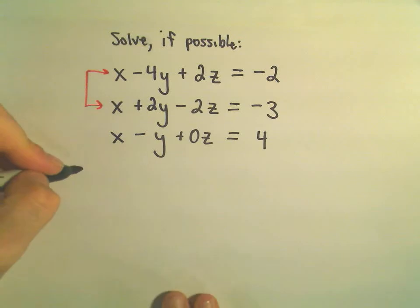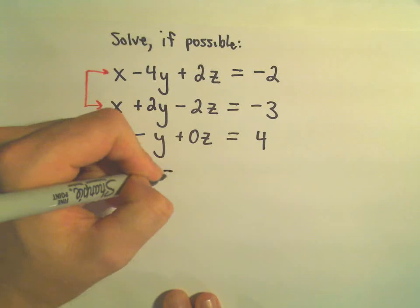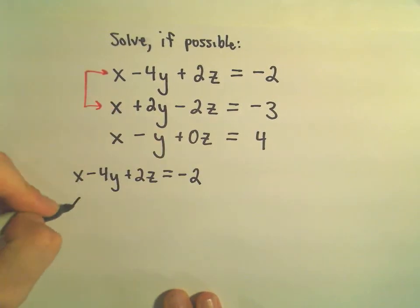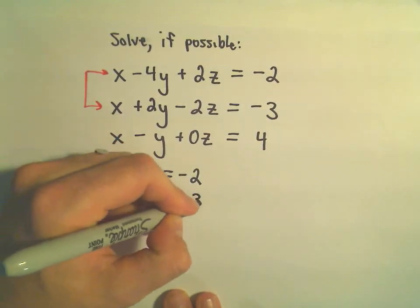So, let's see. We've got x minus 4y plus 2z equals negative 2. We've got x plus 2y minus 2z equals negative 3.